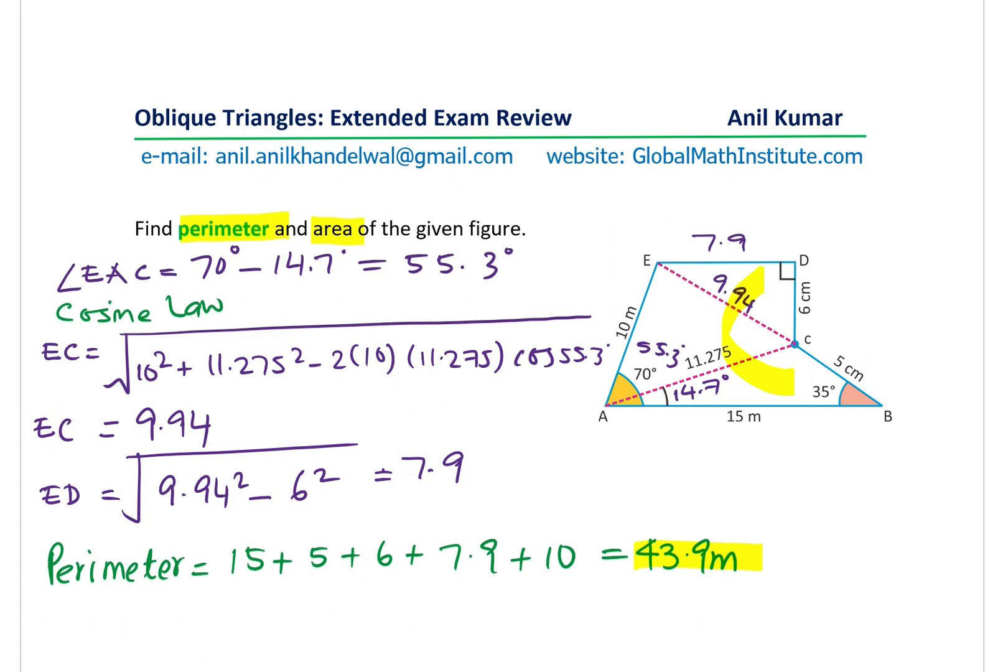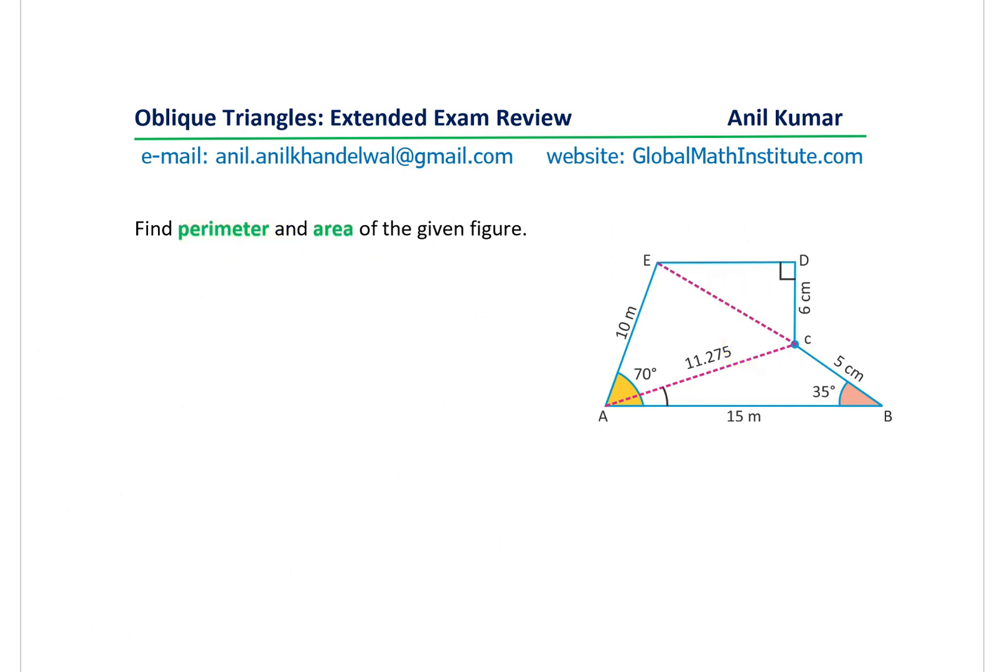So the angles for us are 14.7 and 55.3. So this was 14.7, and this is 55.3, and that is the right angle. So that is not a problem. So that's good. So let's find each area, beginning from the first one, which is let's say A1, A2, and A3.